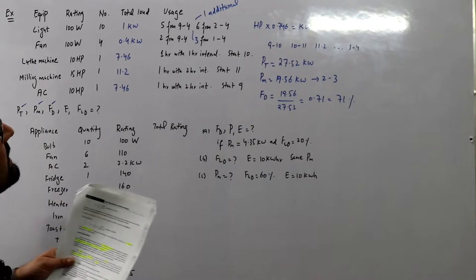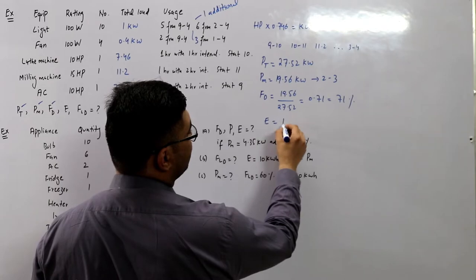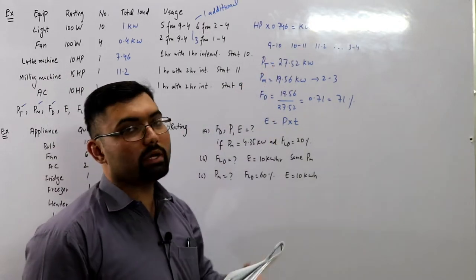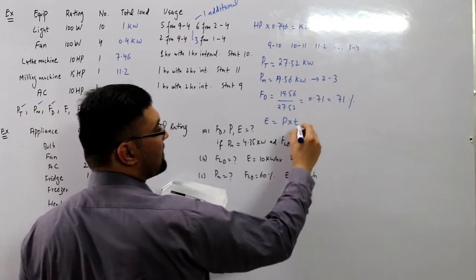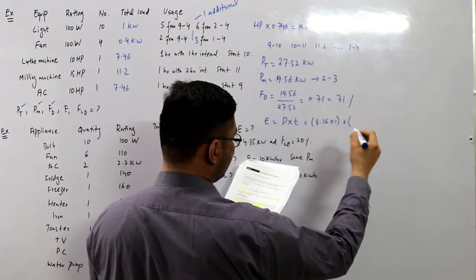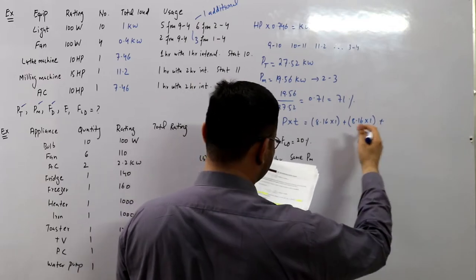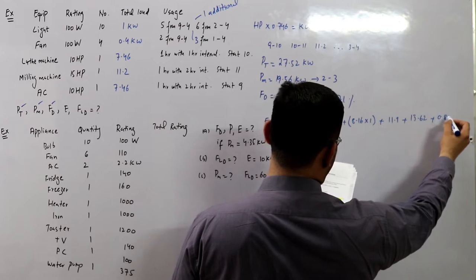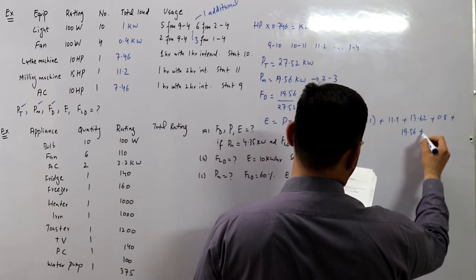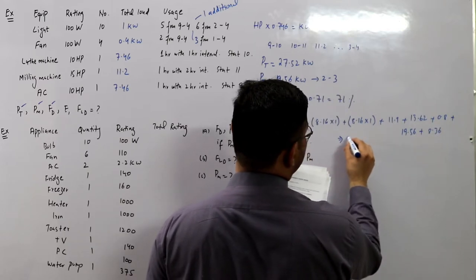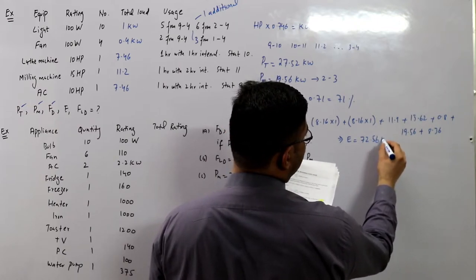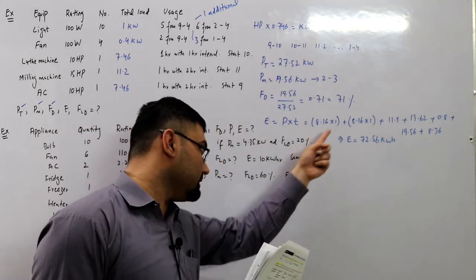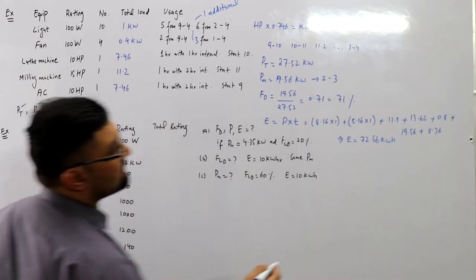The energy consumed is power multiplied by time. Drawing on an hourly basis: 8.16 × 1 + 8.16 × 1 + 11.9 × 1 + 15.62 × 1 + 0.8 × 1 + 19.56 + 8.36. The total energy units consumed comes out to be 72.56 kilowatt hours. Energy equals power into time, with time being one hour for each interval.